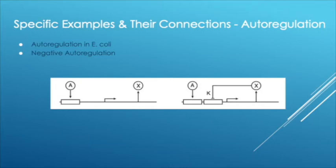34 of the autoregulatory proteins in the E. coli network are actually repressors, which means they stop their own transcription. This is known as negative autoregulation.